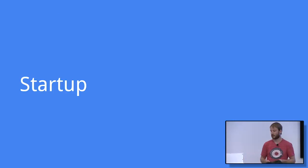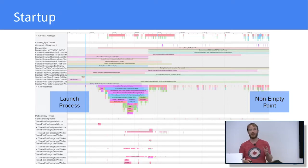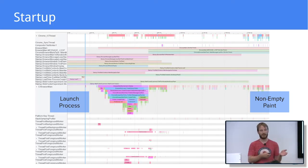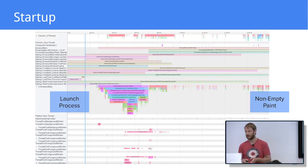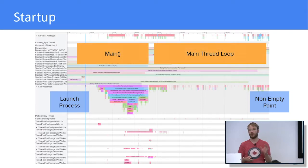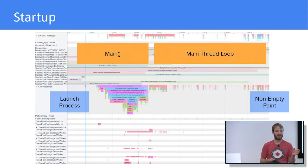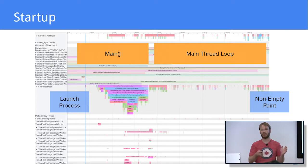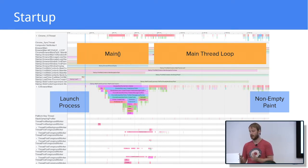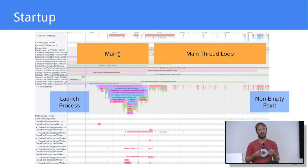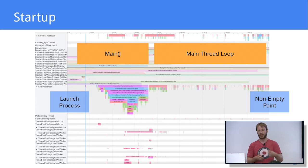So let's start with startup. This is a trace that shows everything that happens from the moment the Chrome browser process is launched until the first non-native paint of the tab happens. It can be divided into two main parts. The first part is running the synchronous initialization part of the main function of Chrome — it calls into many subcomponents to prepare everything needed to run Chrome in a steady state. The second part is running the main thread loop, where the main thread gets tasks from a task queue and runs them.